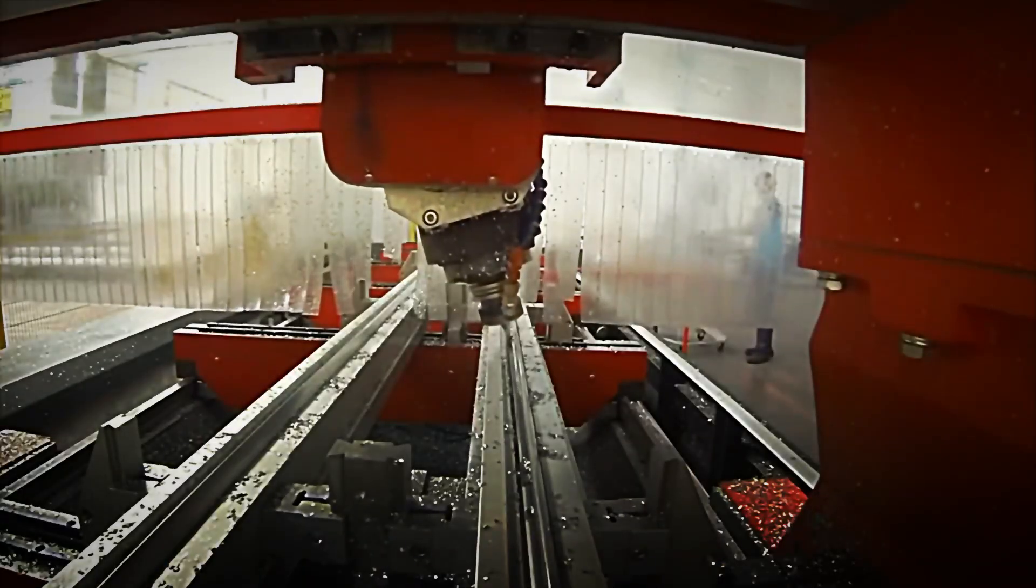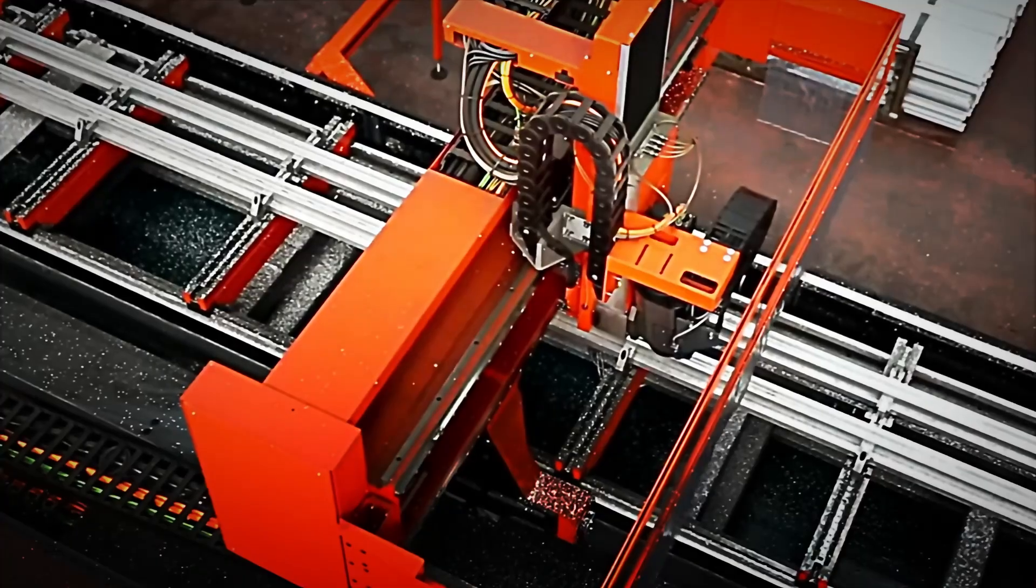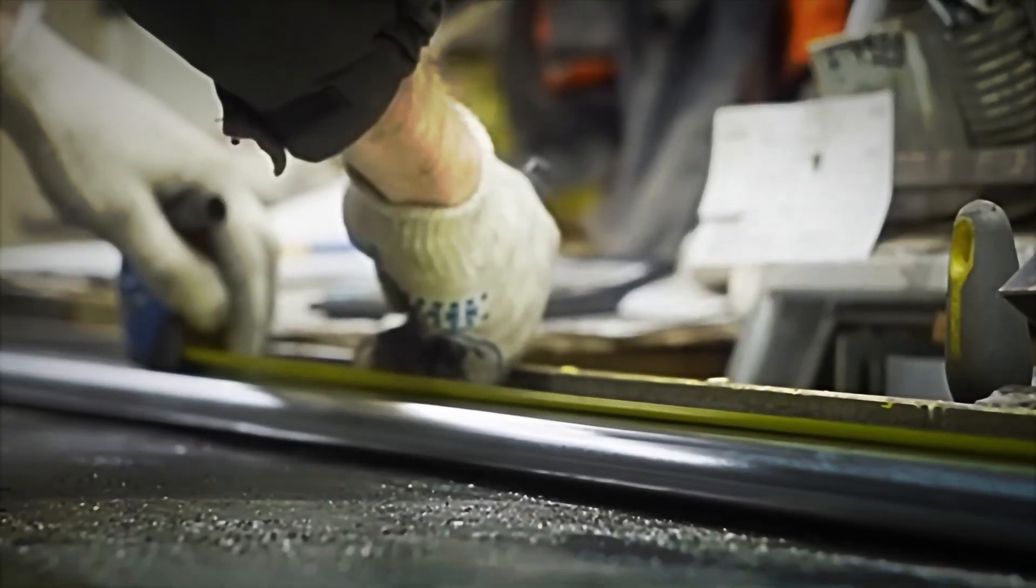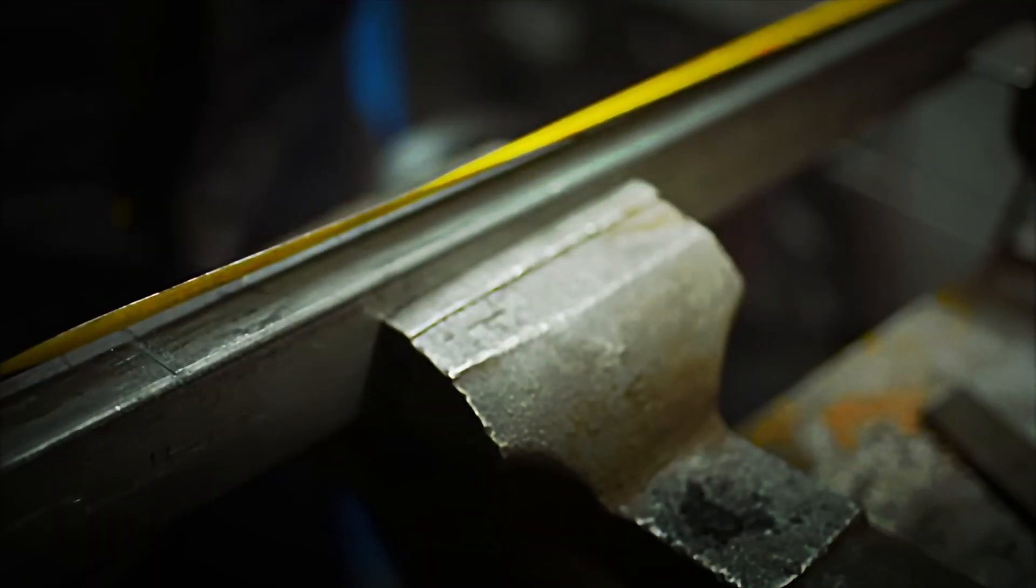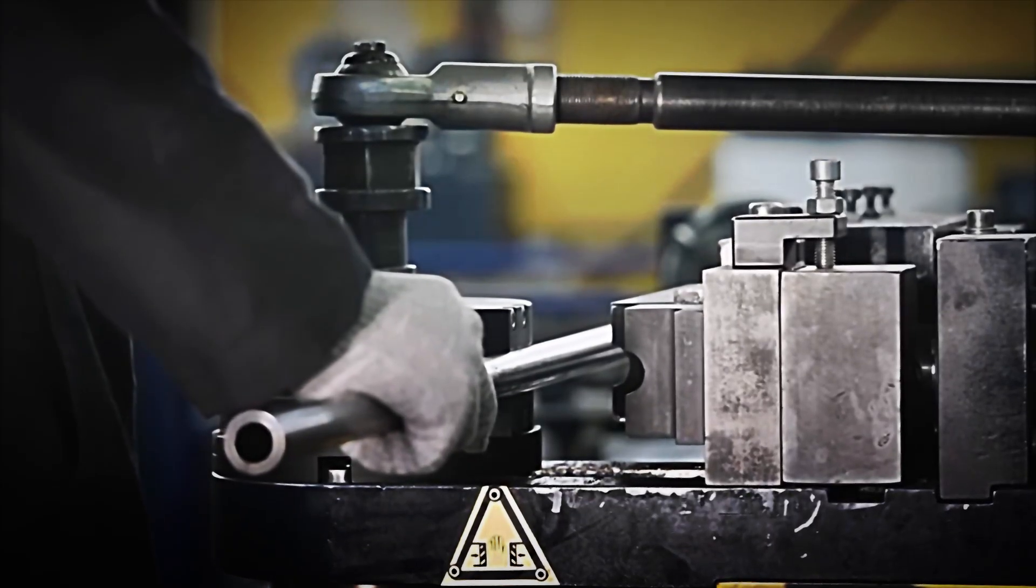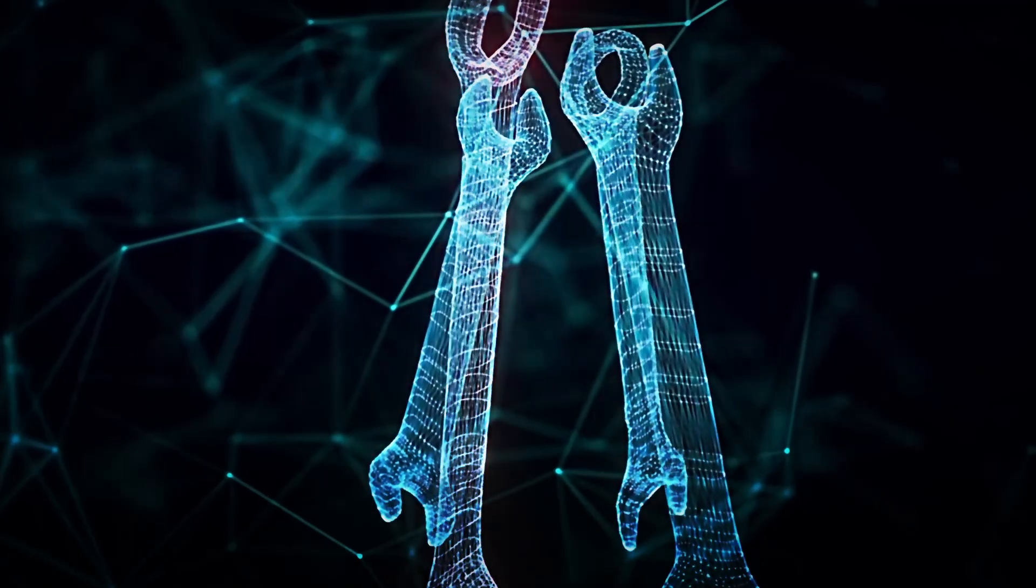Automatic saws, either disc or band saws, segment the material into pieces that will form the basis of each key. The length of these segments typically varies between 150 and 300 millimeters, depending on the final size of the tool. The tolerance cannot exceed one millimeter.